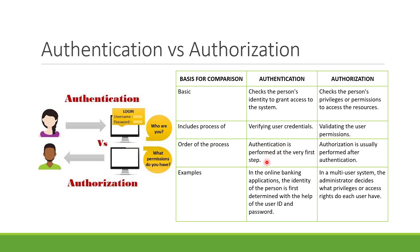Authentication is performed at the very first step, and authorization is performed after authentication. In online banking, the identity of a person is first determined with a user ID and password, and then the administrator decides what privileges or access rights each user has. To summarize simply: authentication is 'who are you?' and authorization is 'what permission do you have?'